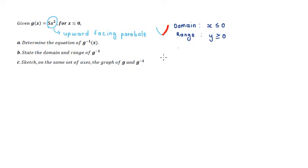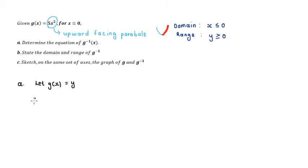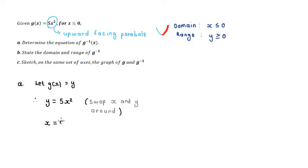For part A, to write down the equation of g inverse, you go about it the same way. First, let g(x) equal y, so y = 5x². Then we go through the process of swapping x and y around, which leads us to x = 5y².